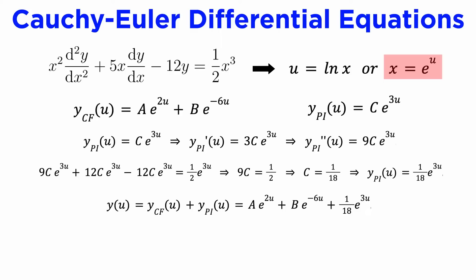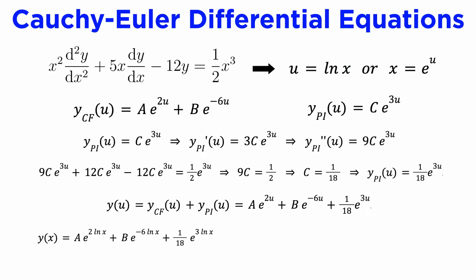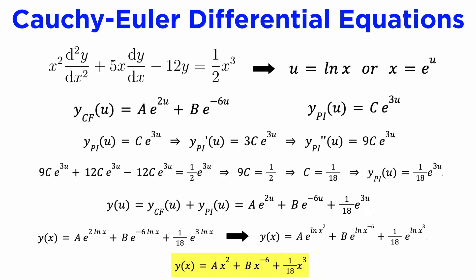The last thing to do is undo our substitution x equals e to the u, which we can rearrange to give u equals natural log of x. When we put u equals log of x into our solution y(u), we can use the laws of logarithms in the exponents, and we find that the exponential terms cancel with the logs, giving the general solution to our DE as y(x) equals ax² plus bx to the negative 6 plus (1/18)x³.